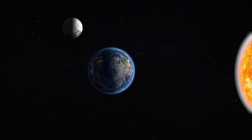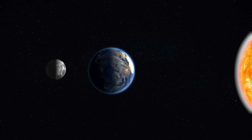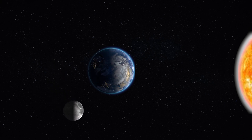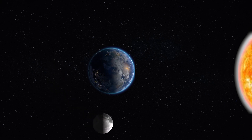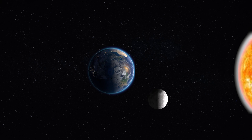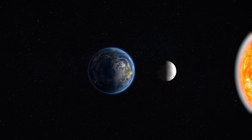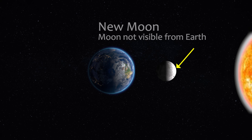Now coming to the interesting aspects of lunar phases. As we can see, the Sun is always lighting up one half of the Moon and one half of the Earth. When the Moon is at this position, even though one half of its surface is lighted up by the Sun, that surface is not visible from Earth — this is what happens during a new moon.